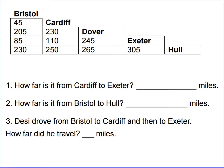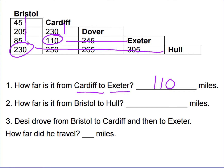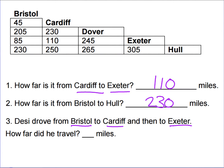From an exam example: Cardiff to Exeter is 110 miles. Bristol to Hull is 230 miles. Desi drove from Bristol to Cardiff and then to Exeter — Bristol to Cardiff is 45 miles, Cardiff to Exeter is 110 miles; add them together for 155 miles total.